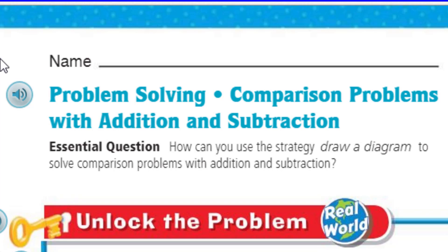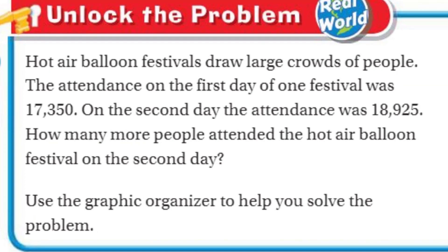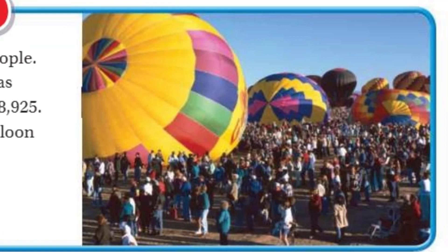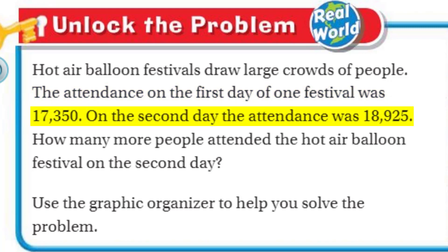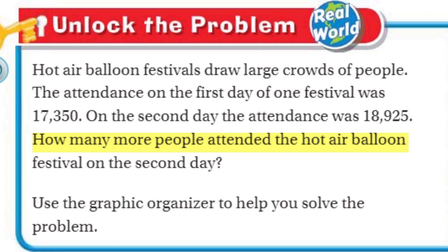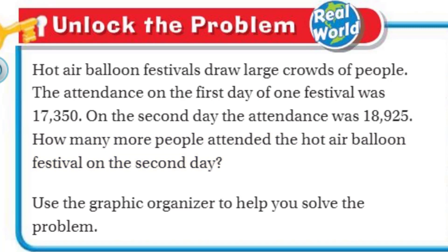My friends, because this is real world. It says here at hot air balloon festivals, they draw large crowds of people. Based on the picture, there's a lot of people there. The attendance on the first day of one festival was 17,350. On the second day, the attendance was 18,925. How many more people attended the hot air balloon festival on the second day? It says use the graphic organizer to help you solve the problem.